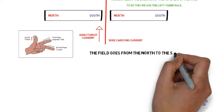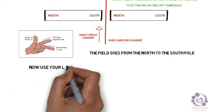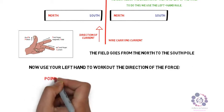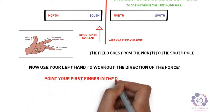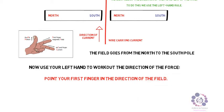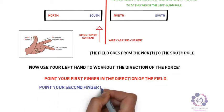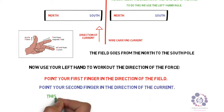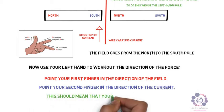So, the field goes from north to the south pole. Now use your left hand to work out the direction of the force. First, point your first finger in the direction of the field. Now point the second finger in the direction of the current. You should have your thumb pointing upwards. This shows the motion.